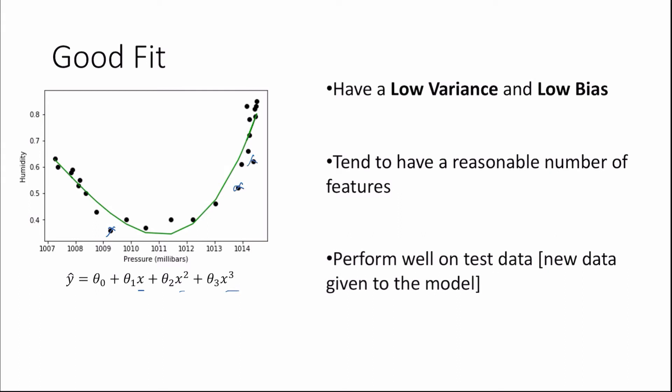I plan to dedicate my next episode to explaining exactly what training data, cross-validation data, and test data is, but I'll give a brief introduction now. We can think of test data as data which is hidden in the calculation of our model. For example, at the point 1013 and 0.5, a model predicts a value of roughly 0.48 whereas the actual test data says 0.5 — an error of around 0.02, which is very low. Test data is essentially data not included in the calculation of our model, so we can see how our model performs on it and make adjustments accordingly.